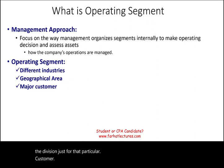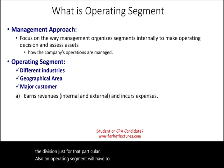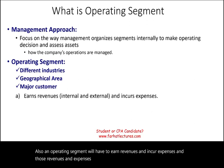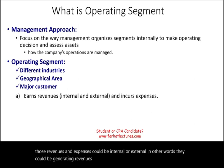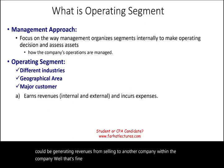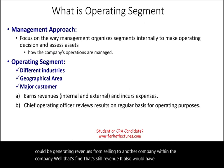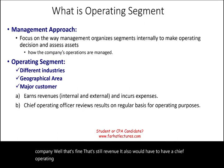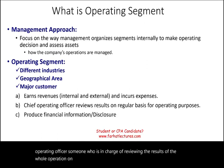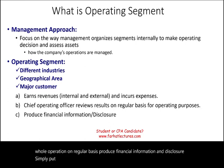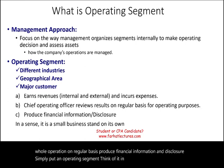An operating segment also has to earn revenues and incur expenses — and those revenues and expenses could be internal or external. In other words, they could generate revenues from selling to another company within the same company. It also needs to have a chief operating officer reviewing results on a regular basis, and to produce financial information and disclosures. Simply put, think of an operating segment as a small business that stands on its own.